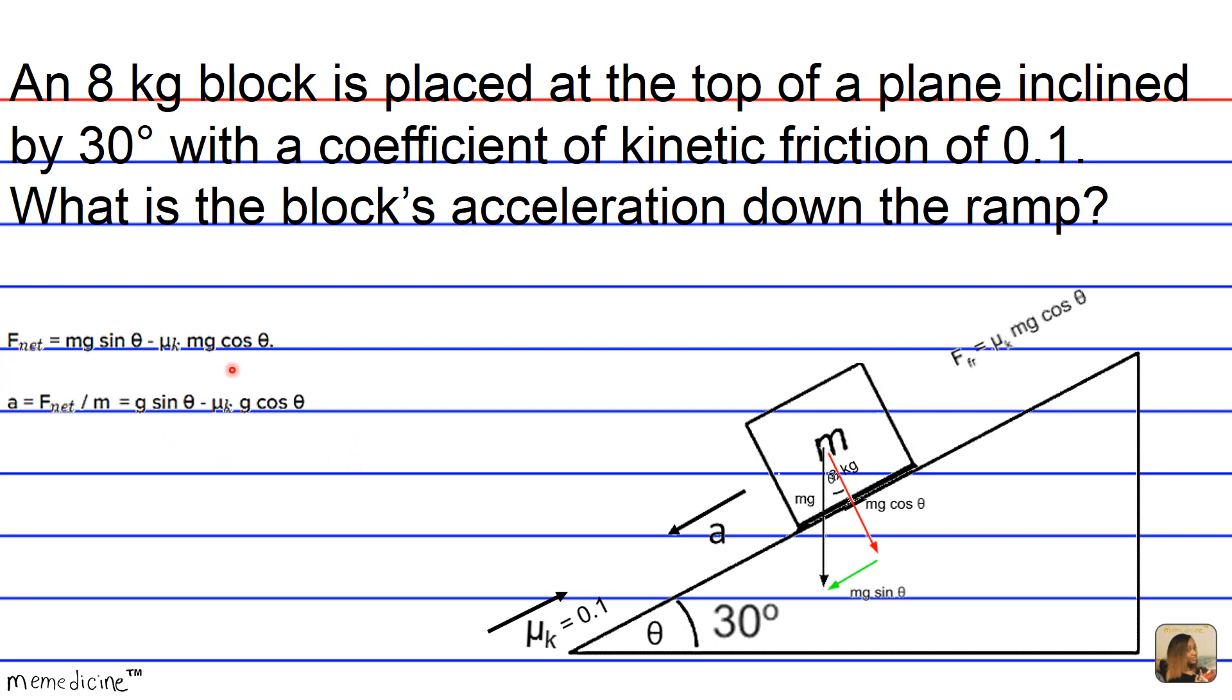And lucky for us, we know all these terms already. So instead of writing 9.8 meters per second squared for g, since we don't have a calculator on the MCAT, we can approximate at 10 and that should be okay.